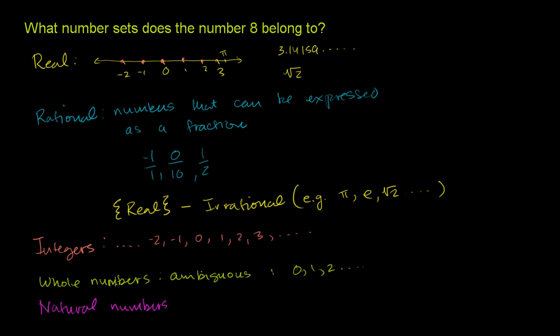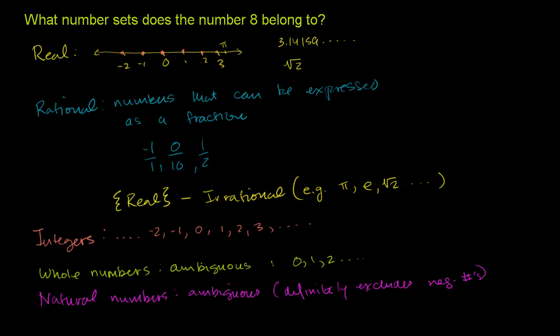So this is also ambiguous, but it definitely excludes negative numbers. And so if it definitely excludes negative numbers, it's like, why is it ambiguous? Well, it's ambiguous whether it includes 0. So sometimes 0 is natural, so 0 may or may not be natural, depending on the context.